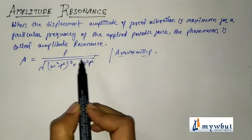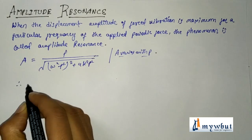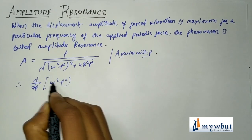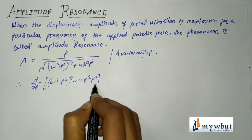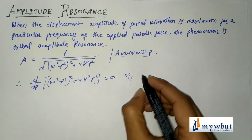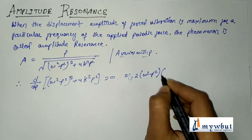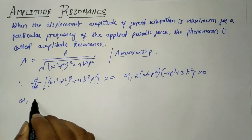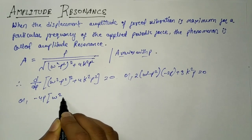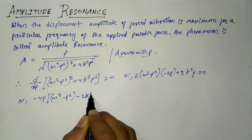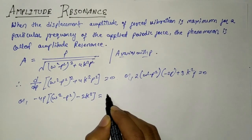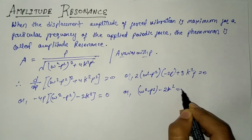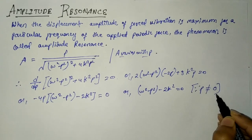The amplitude is maximum when the denominator of this equation is minimum. Applying simple mathematics: d/dp of [(omega squared minus p squared) squared plus 4k squared p squared] equals zero. This gives 2(omega squared minus p squared)(minus 2p) plus 8k squared p equals zero, simplifying to minus 4p(omega squared minus p squared minus 2k squared) equals zero. Therefore omega squared minus p squared minus 2k squared equals zero, since p cannot equal zero.